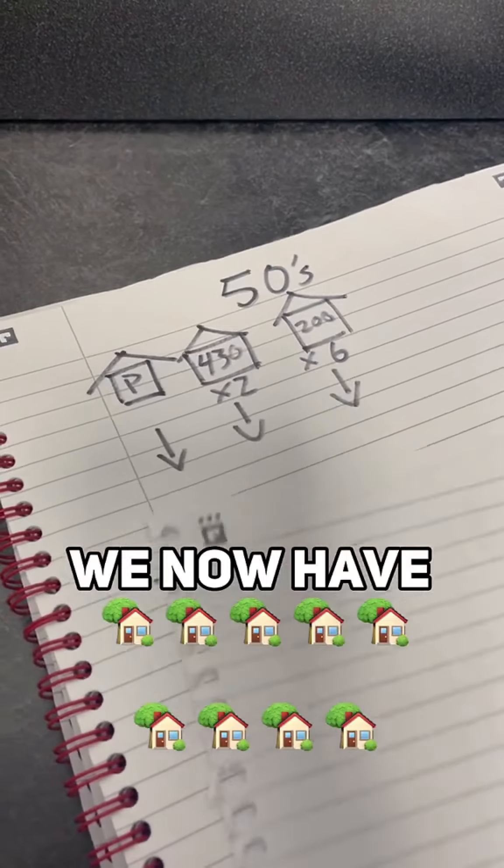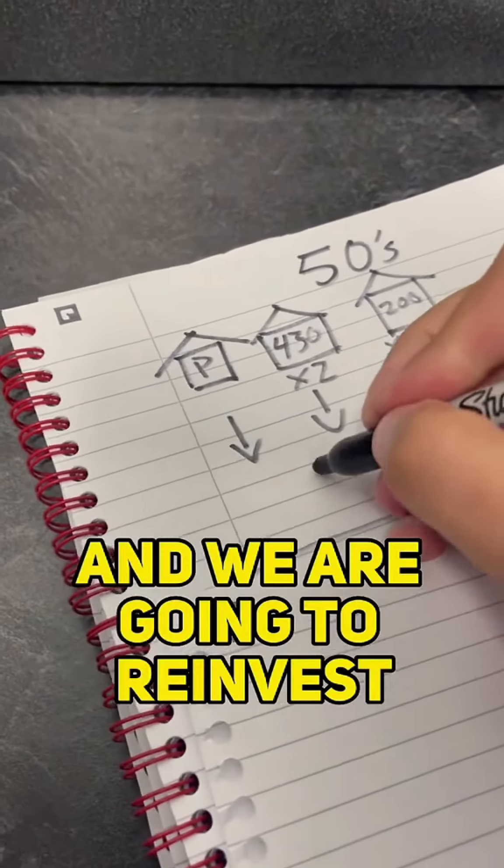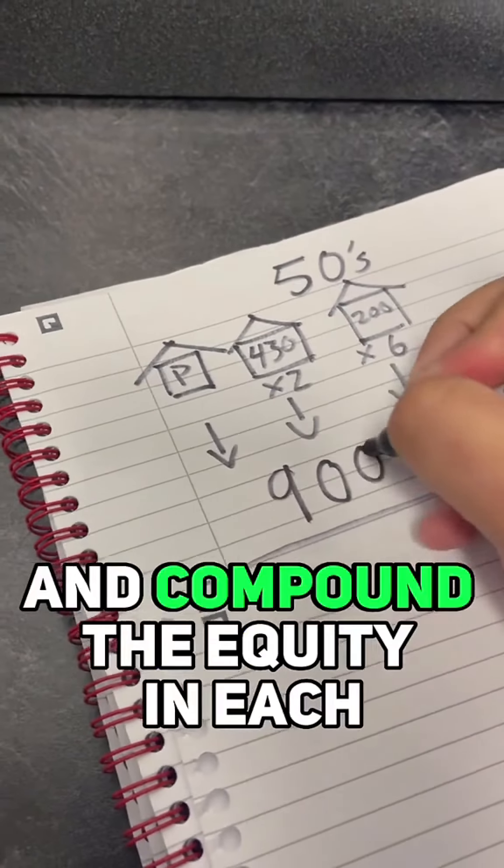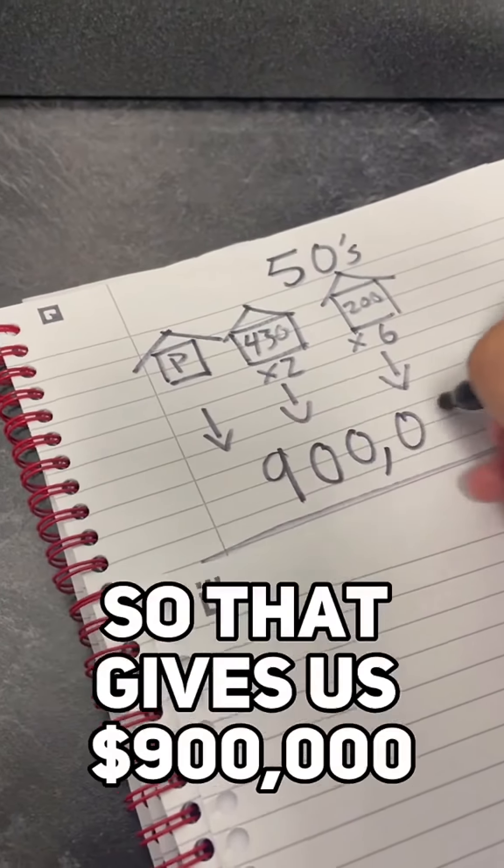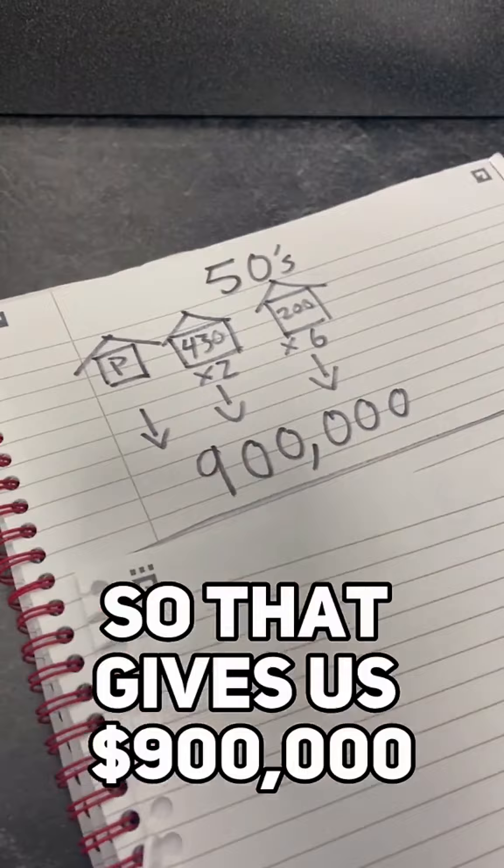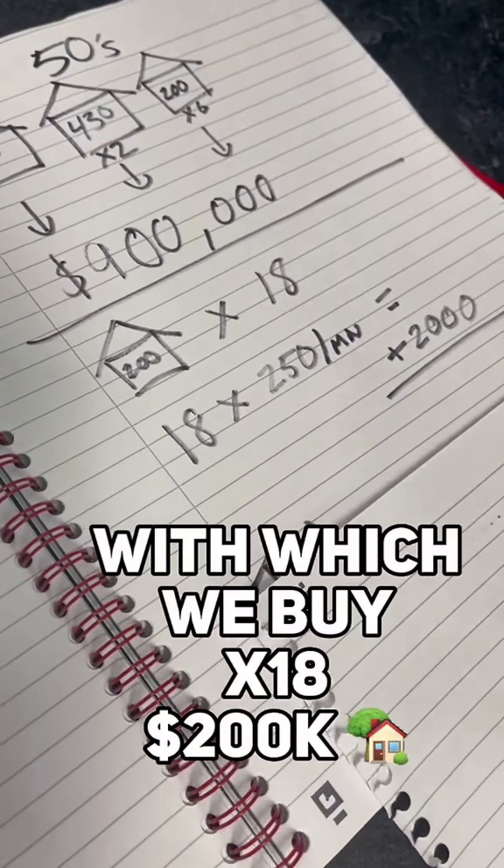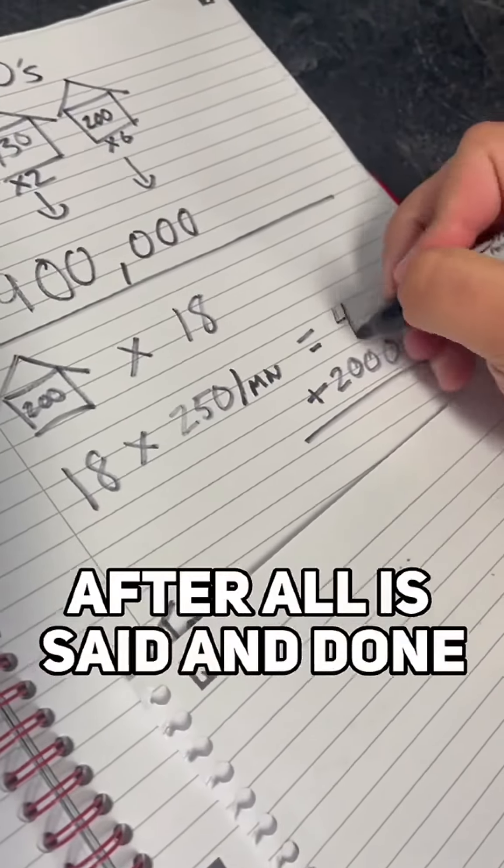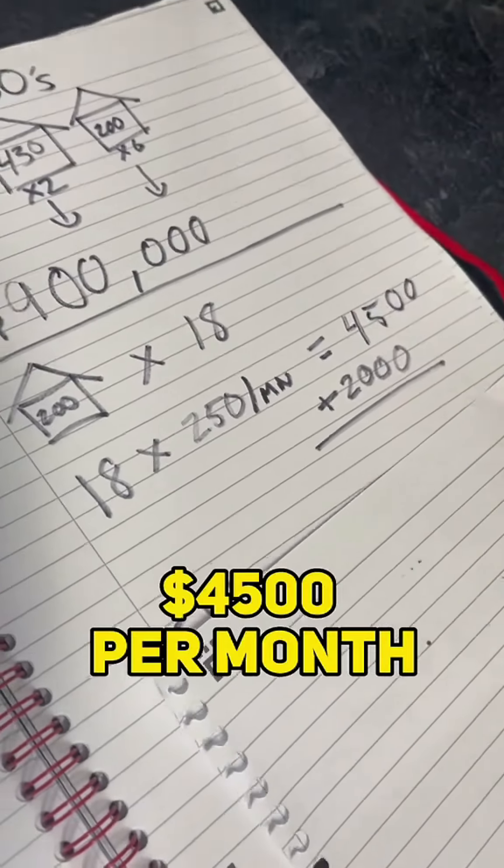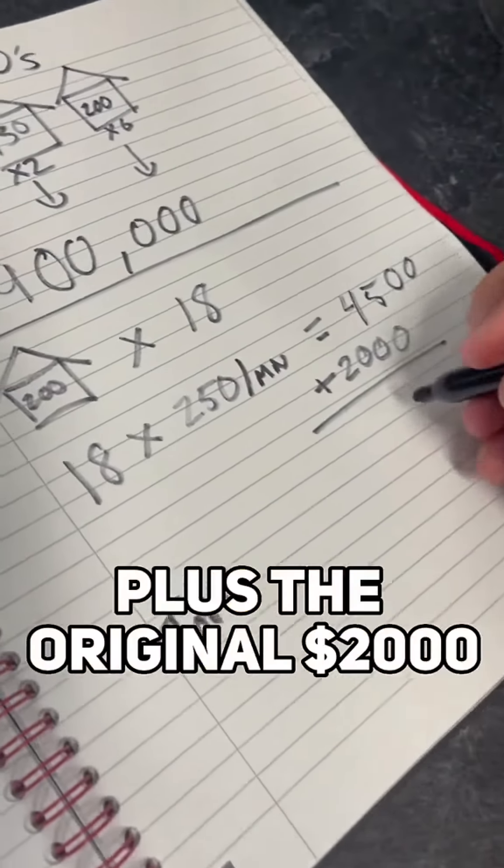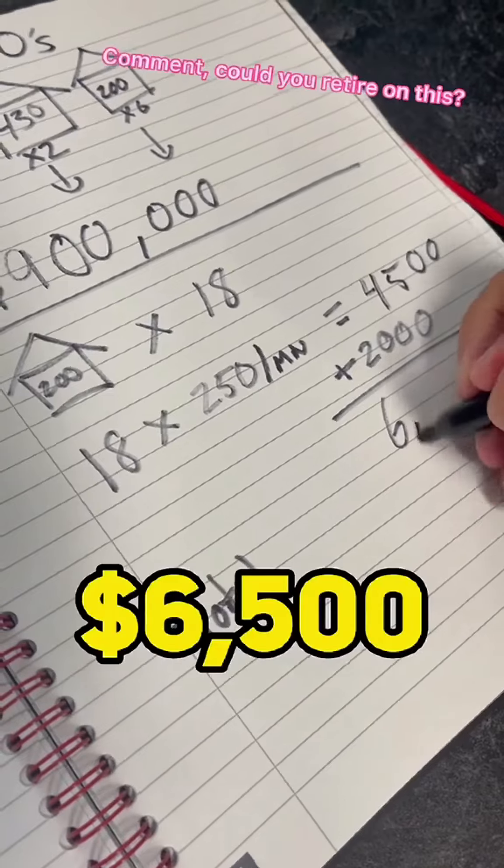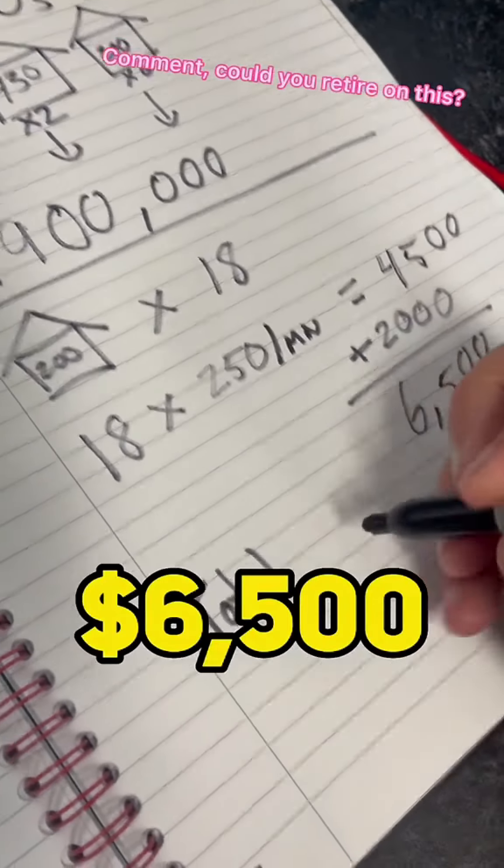Fast forward another 10 years, we now have nine properties and we are going to reinvest and compound the equity in each of those. So that gives us $900,000 with which we buy 18 $200,000 homes. After all is said and done, that is $4,500 per month plus the original $2,000 gives us $6,500.